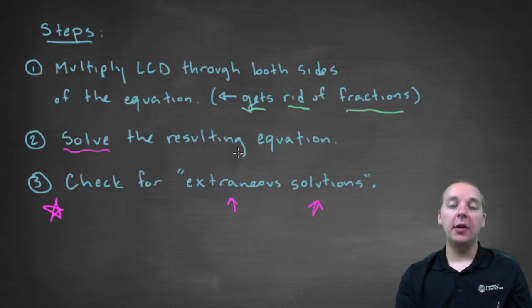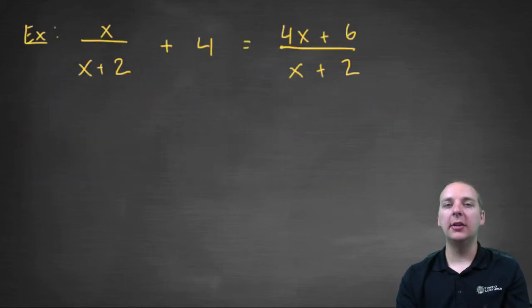We're going to have another video where we do some more robust examples, but for this video let's at least go through one kind of lighter example just to show you how some of this math works. Let's try this one here. We have x over x plus 2 plus 4 equals 4x plus 6 divided by x plus 2.